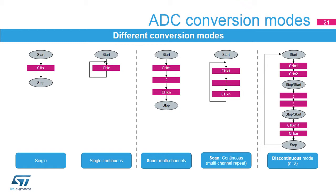The ADC supports several conversion modes. Single mode converts only one channel in single shot or continuous mode. Scan mode converts a complete set of predefined programmed input channels in single shot or continuous mode. Discontinuous mode converts a short sequence, called a subgroup, of N conversions (N ≤ 8) that is part of the sequence. When an external trigger occurs, it starts the next N conversions selected in the ADC SQR registers until all conversions in the sequence are done.